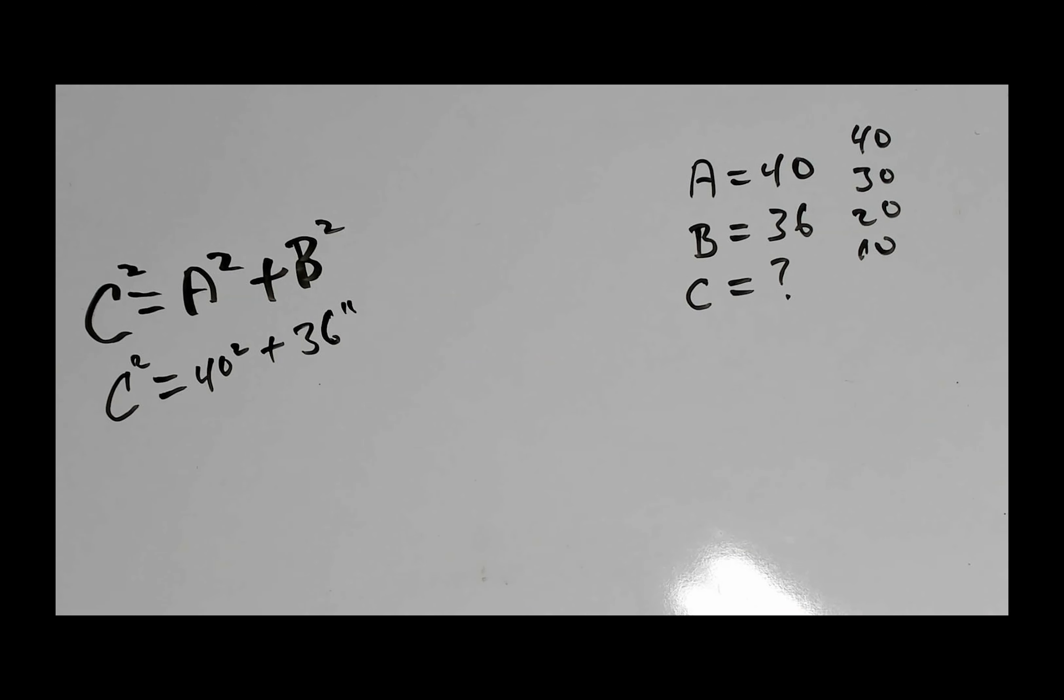All right, let's go ahead and figure this out here. 40 squared, C squared. 40 squared is 1,600 plus 36 squared.